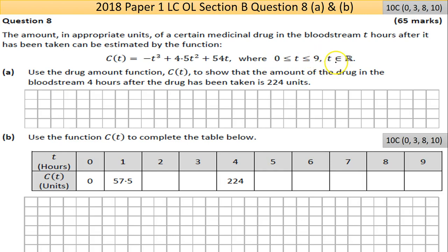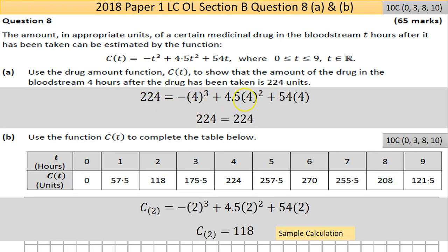We're told time is between zero and nine hours, and t is the number of hours — it could be any number like eight and a half. For Part (a), it says use the drug amount function c(t) to show that the amount of drug in the bloodstream four hours after being taken is 224 units. You're told your answer, so you put t = 4 into the function. I put 4 in instead of t all the way across, put it through the calculator, and end up getting 224 = 224.